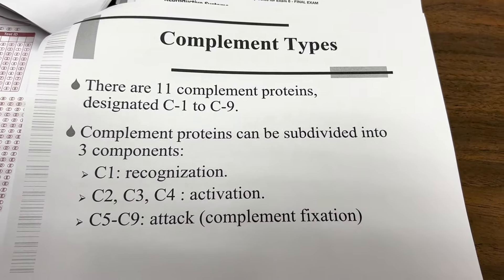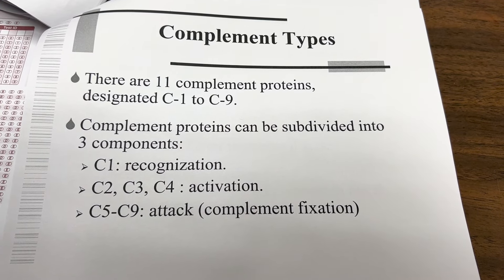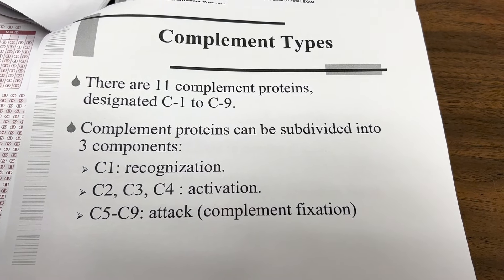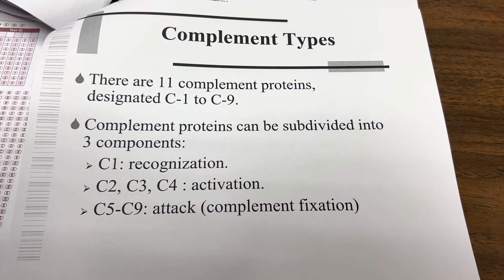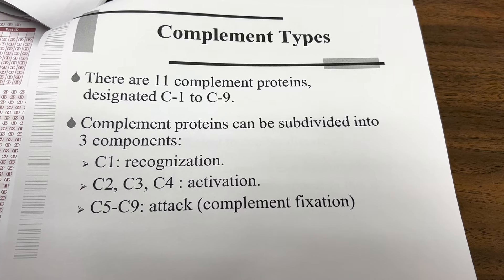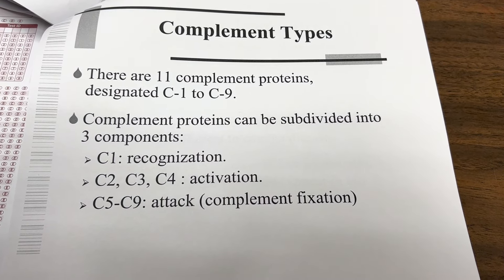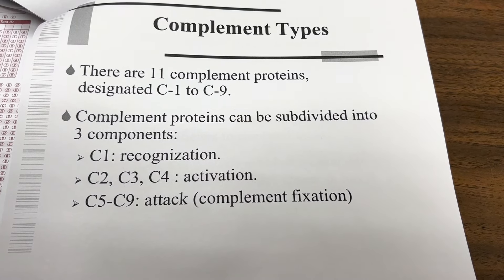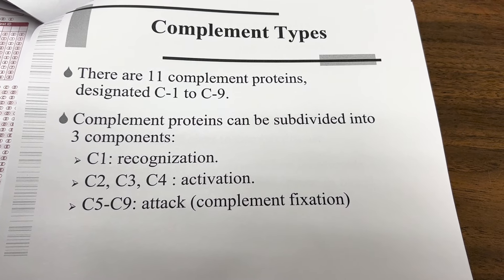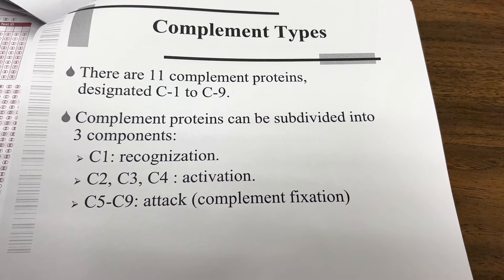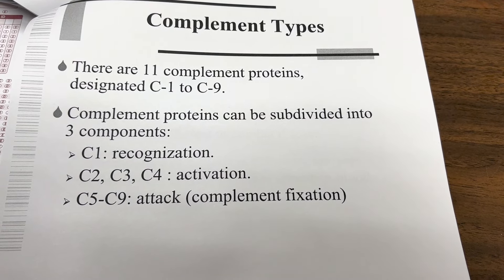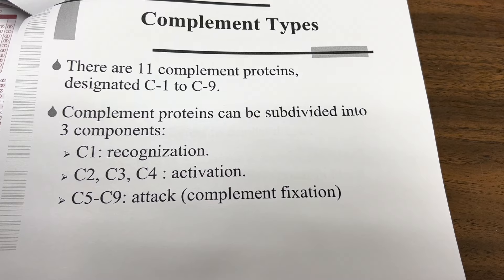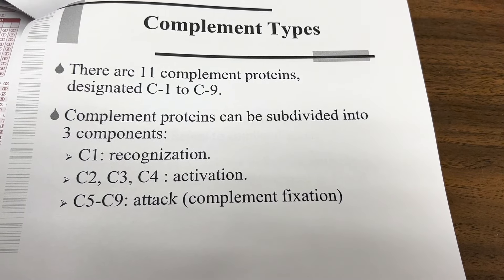There are 11 complement proteins designated C1 to C9. Complement proteins can be subdivided into three components: C1 for recognition, C2 through C4 for activation, and C5 through C9 for the attack — complement fixation.